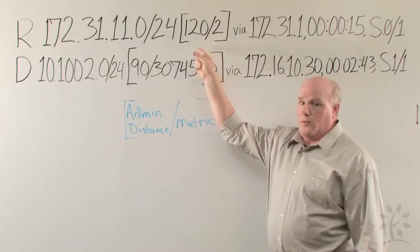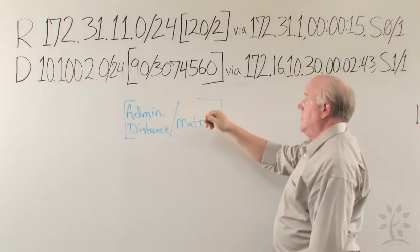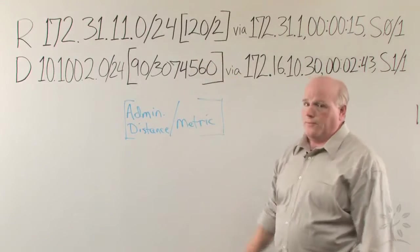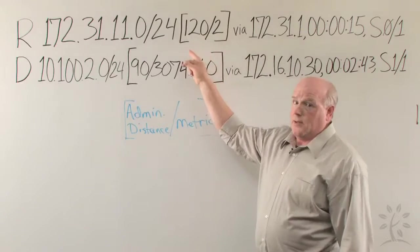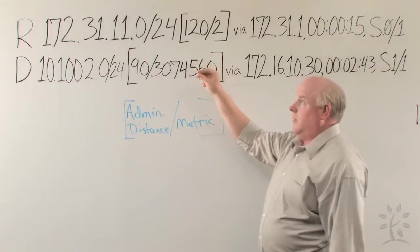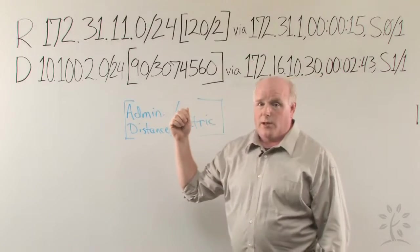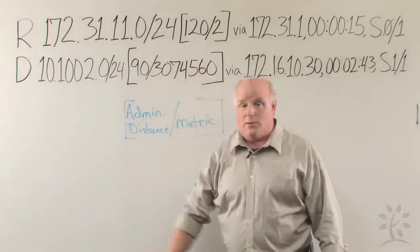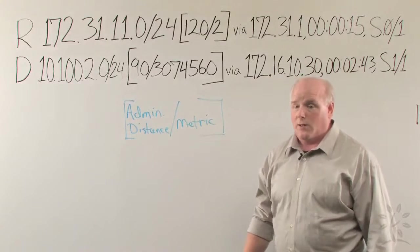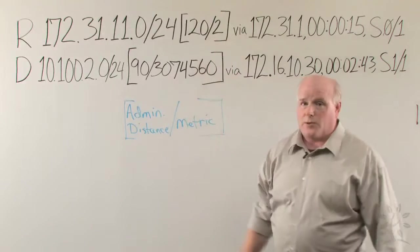But what about these two numbers in between inside the brackets? We have 120 slash 2. Well, that means that is the administrative distance and the routing metric. So there's a little more information that it's telling us. It's saying that RIP is running at its default administrative distance of 120, and it's two hops away.